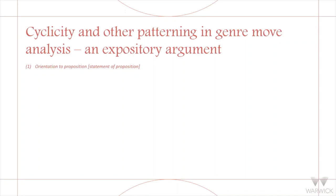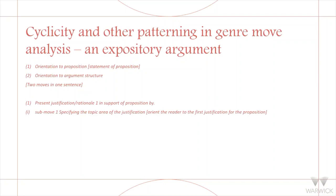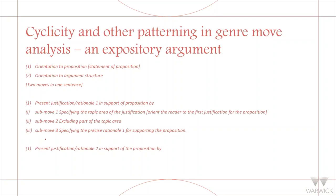So in essays, you may have orientation to proposition, orientation to argument structure — two moves in one sentence, by the way. We like to see moves as beautifully discrete, but I find a couple of moves in each sentence. Then maybe two cycles here: present justification, rationale in support of proposition — so the first argument, sub-move one and sub-move two, sub-move three. And then we could have justification. This is not theoretical — I analysed parts of Swales' own writing to produce this. Then a second cycle: justification and rationale two, sub-move one, and sub-move two. So there are some patterns in essays.